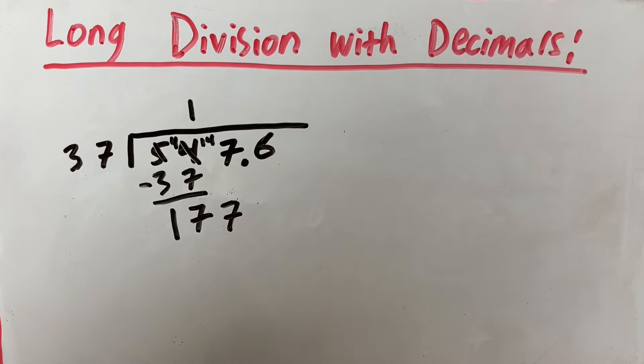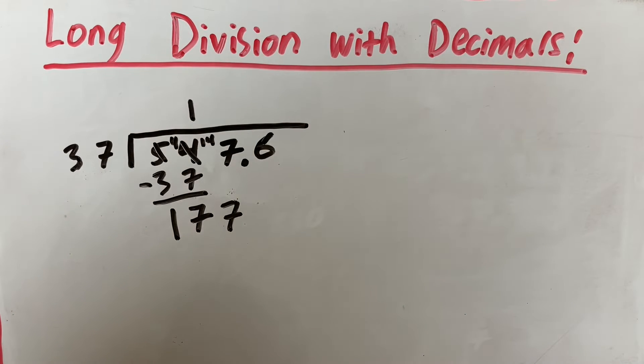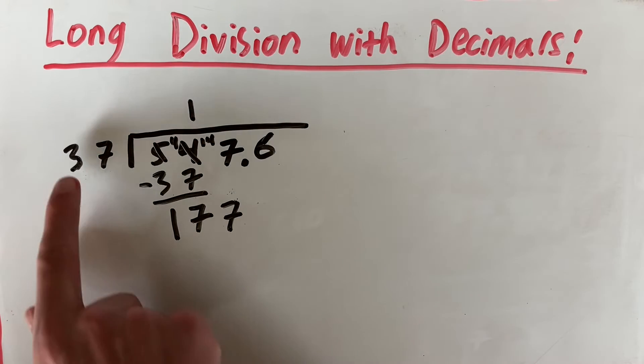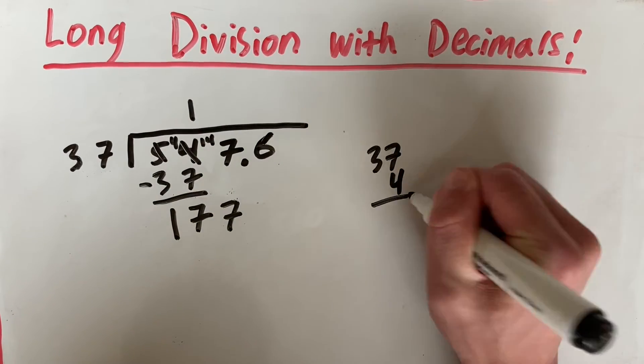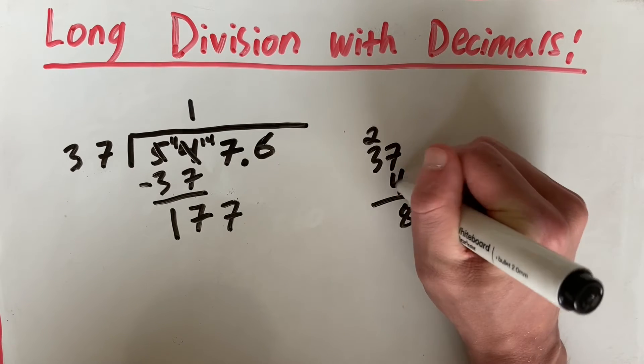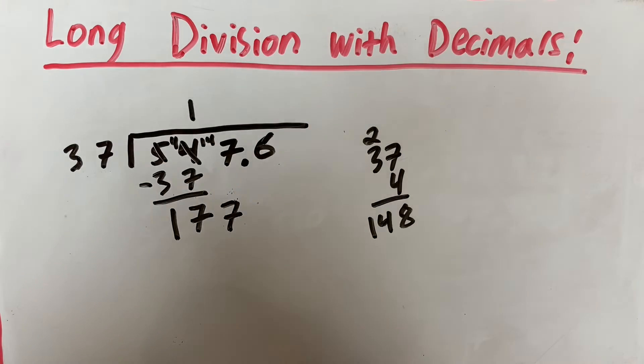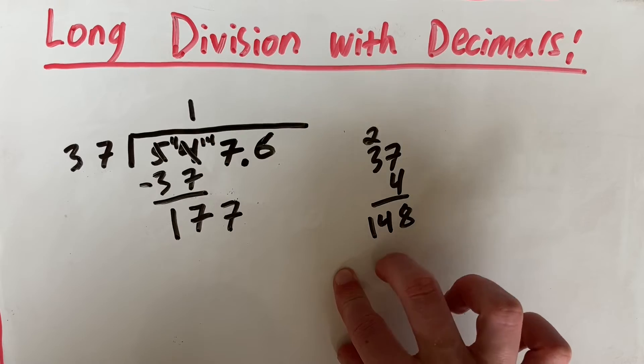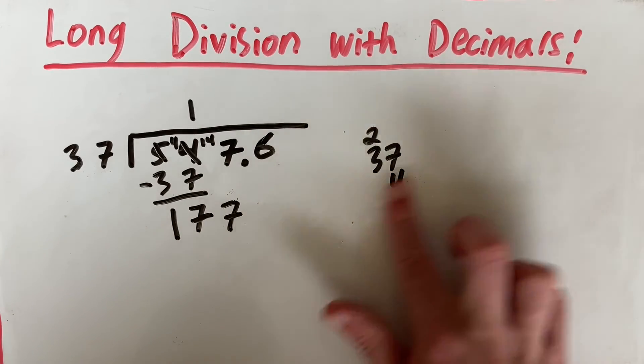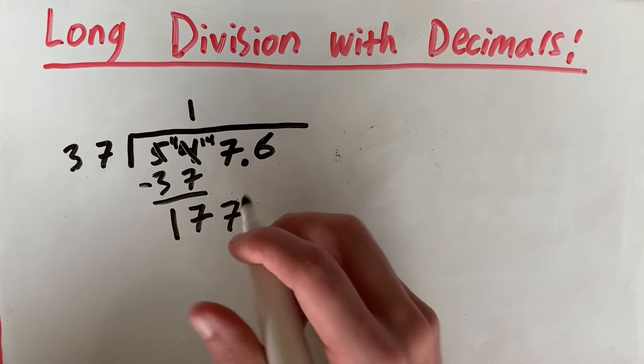So how many times does 37 go into 177? Well, just by looking at this, let's guess 4 times. So if we test this, we can quickly work out by hand what 37 times 4 is. So that will give us 28. 4 times 3 is 12 plus 2 is 14. So 148. And 148 plus 37 will be larger than 177. Meaning that 4 is the number we have to use.